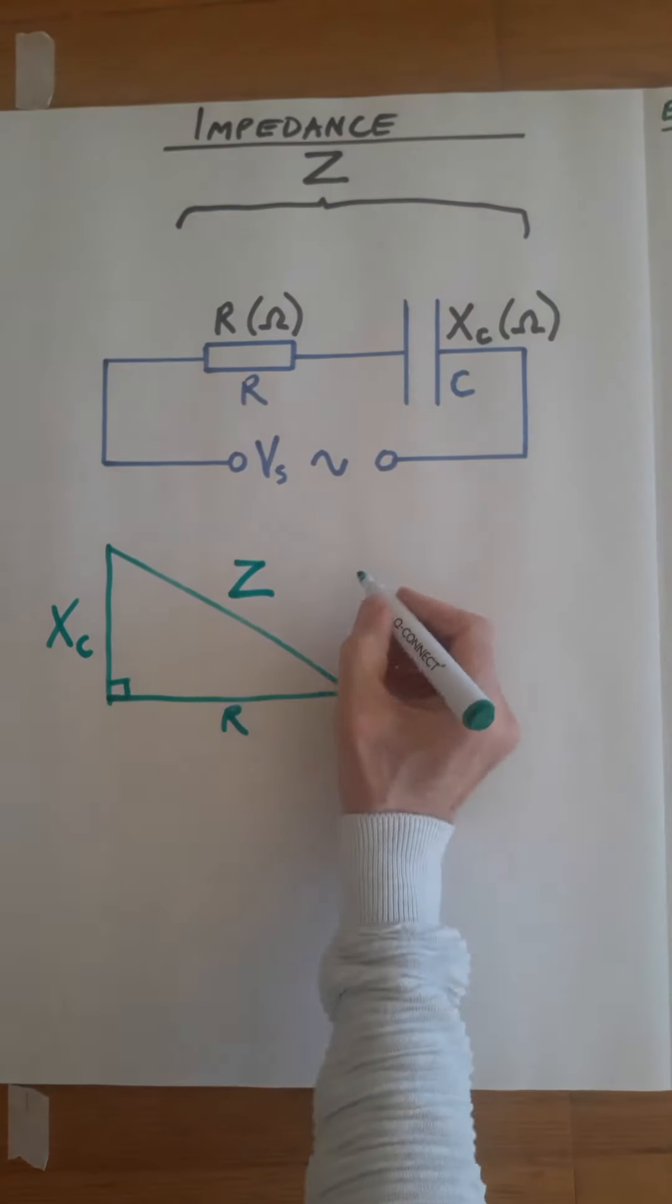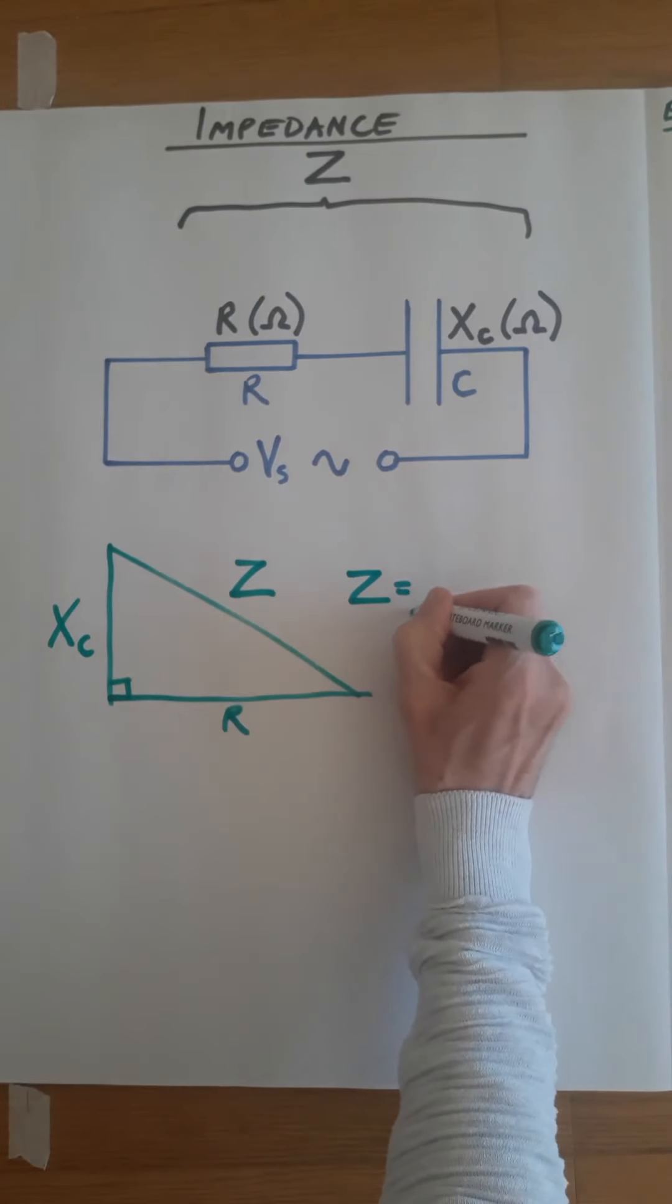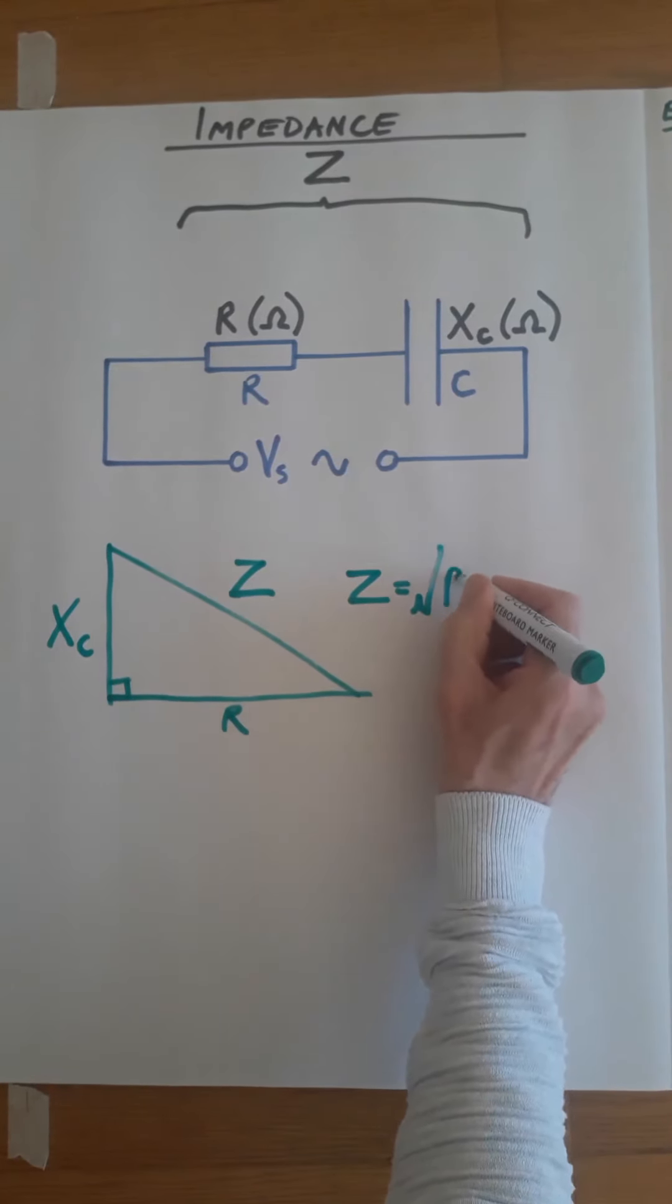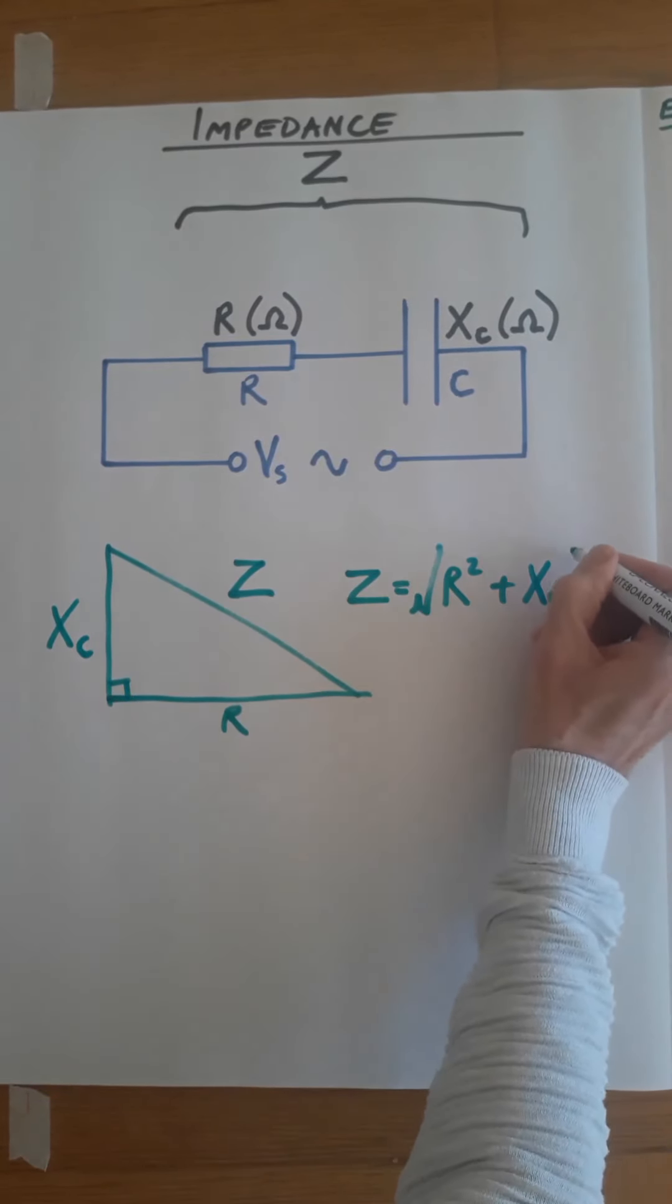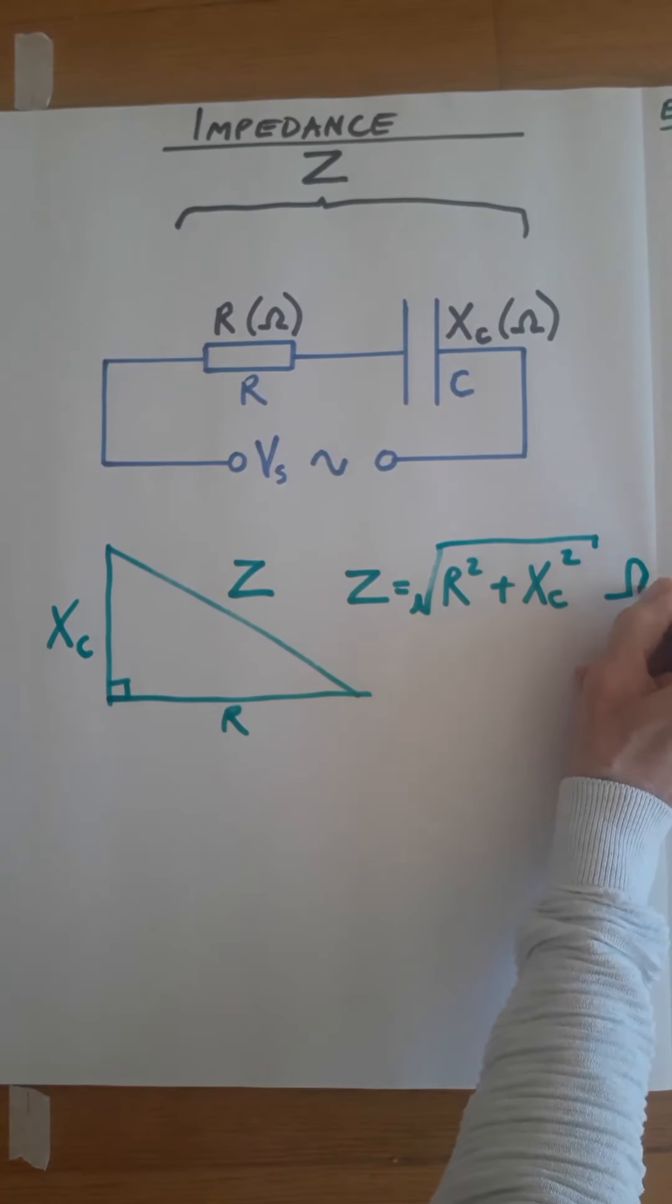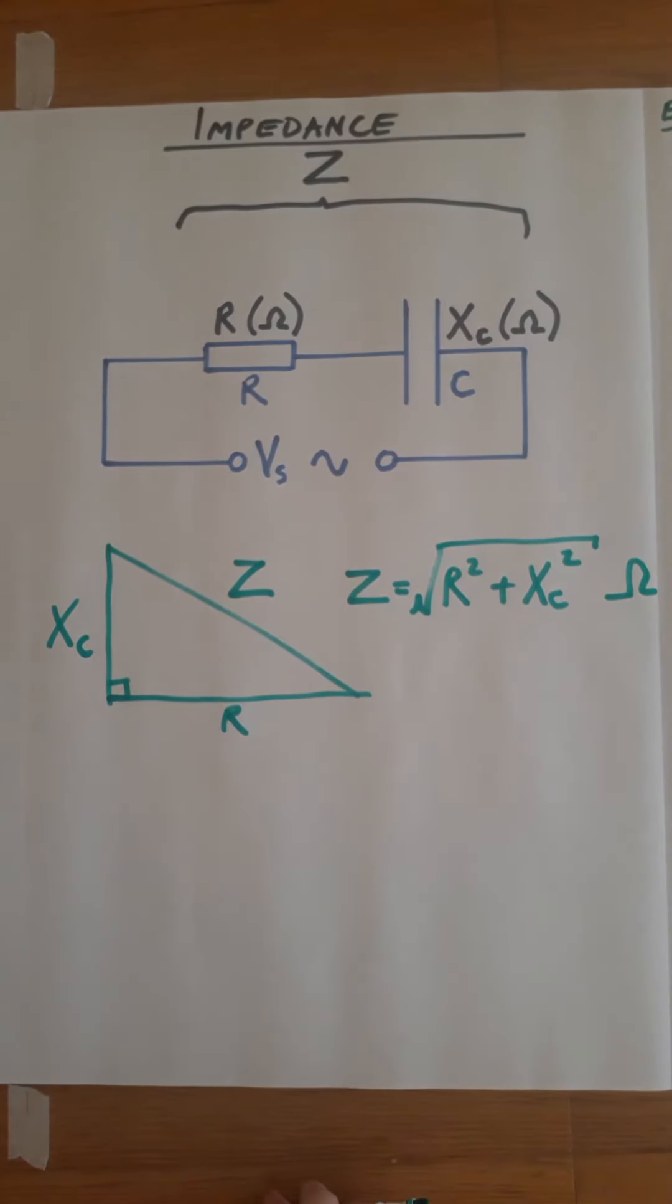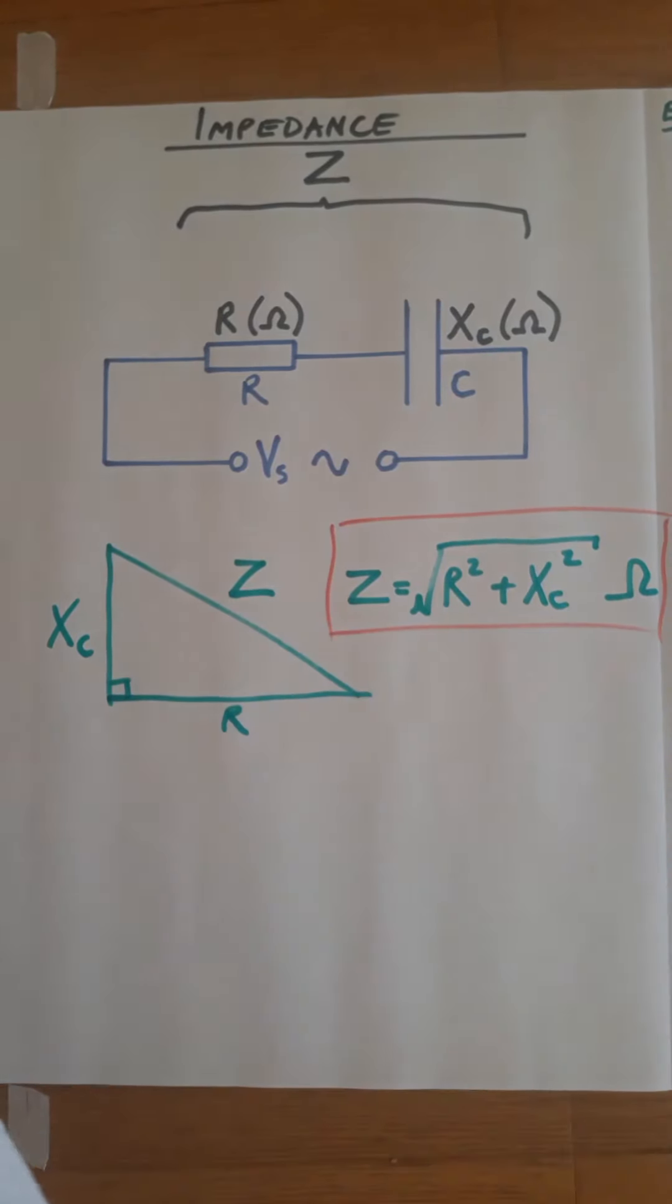So we can calculate impedance from Z equals square root of R squared plus Xc squared, and that will be in ohms. This is an important formula to remember.